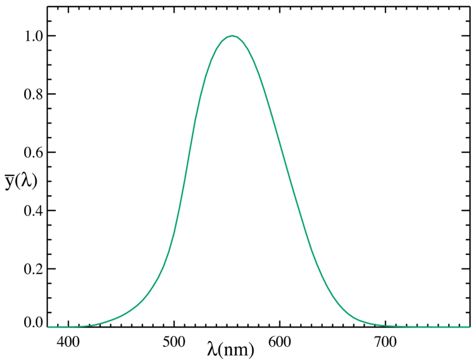At temperatures where the tungsten filament of an ordinary light bulb remains solid, below 3683 Kelvin, most of its emission is in the infrared.